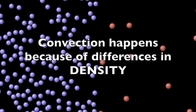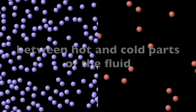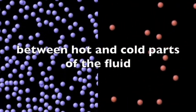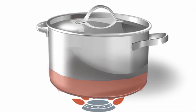Convection happens because of differences in density between hot and cold parts of the fluid. Imagine you have a pot of boiling water and you put it on the stove. The water at the bottom of the pot is now heated through conduction.